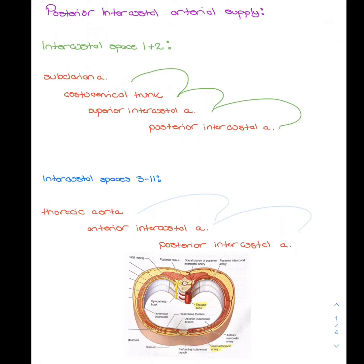For intercostal spaces 3 through 11, it travels from the thoracic aorta to the anterior intercostal artery, where it anastomoses with the posterior intercostal artery.